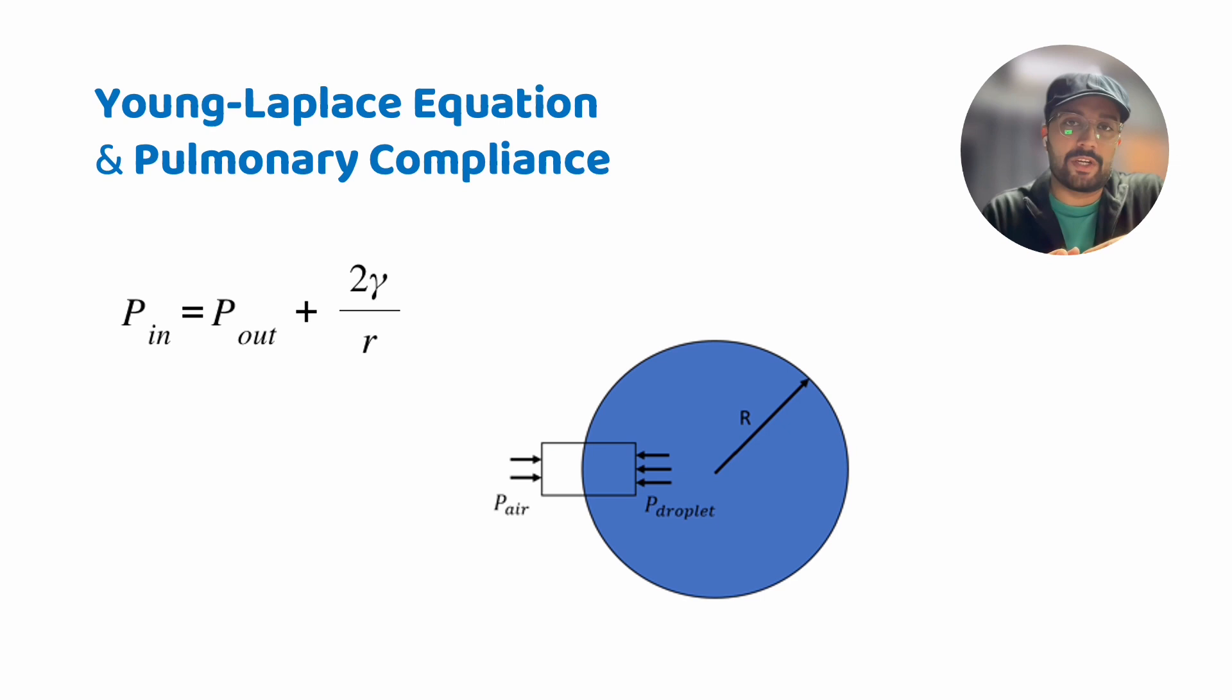If there is no gas pressure, there will be collapse of alveoli which is called atelectasis and we have to balance between these two forces.